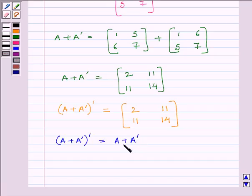So we can write A plus A transpose is a symmetric matrix. As we have already read in key idea that if transpose of a matrix is equal to the matrix, then it is a symmetric matrix.